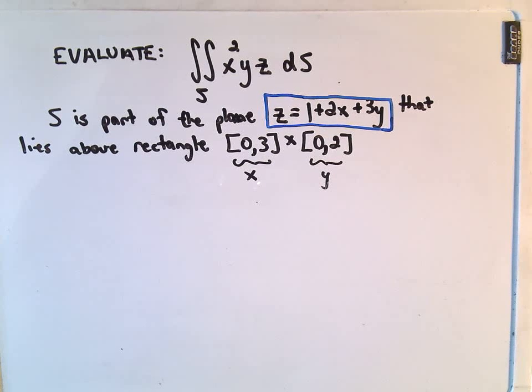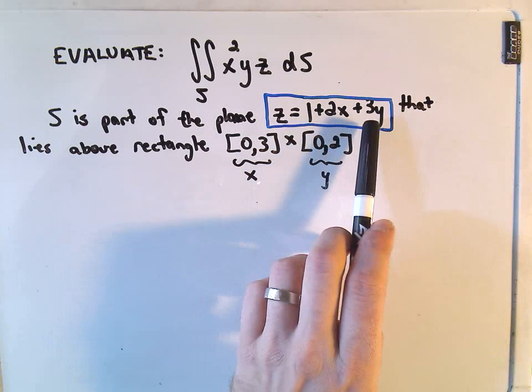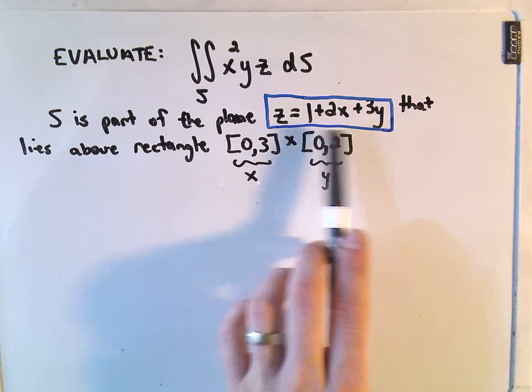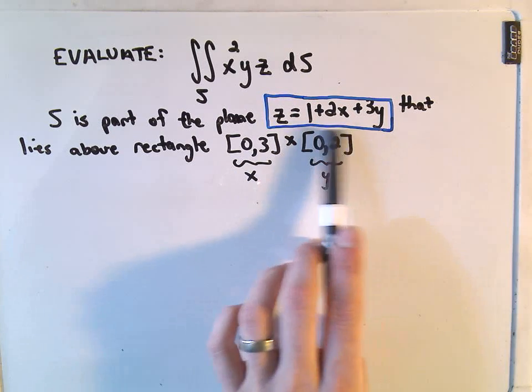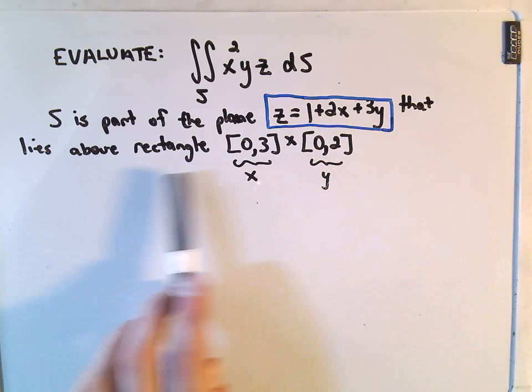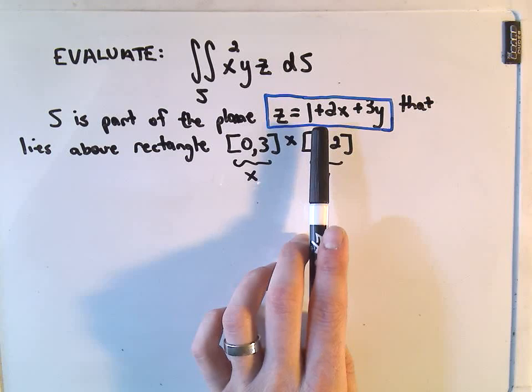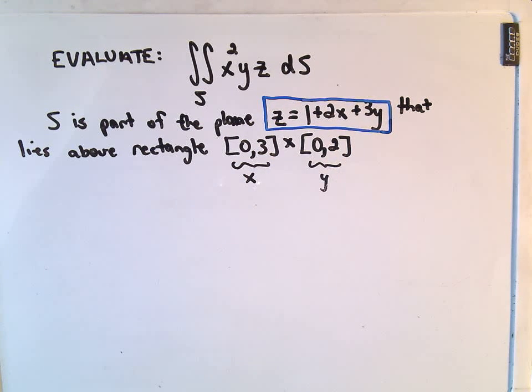In this case, we're going to evaluate the surface integral where our surface is z = 1 + 2x + 3y, and the function we're integrating is x²yz. We're not going to integrate over this entire surface—that would give you something kind of crazy—we're going to integrate over the region that lies above the rectangle [0,3] × [0,2].